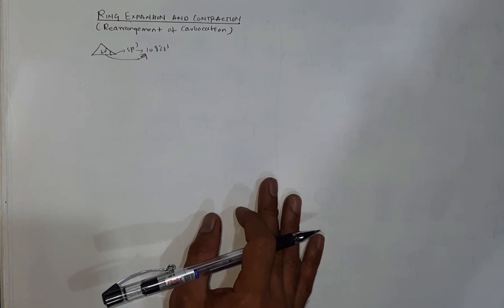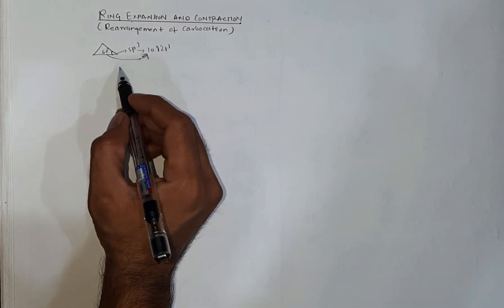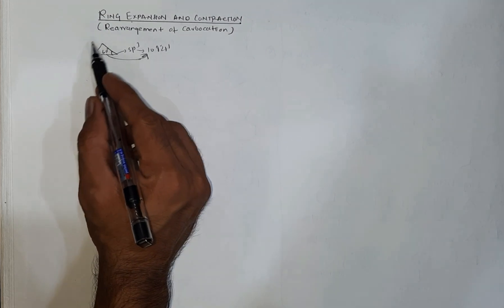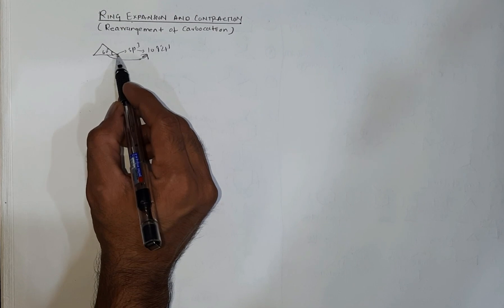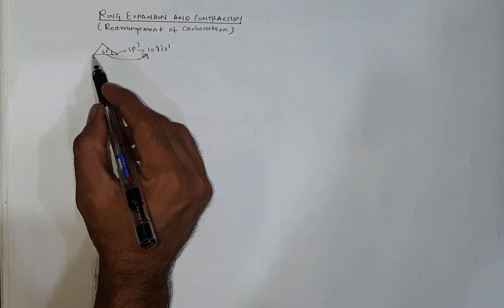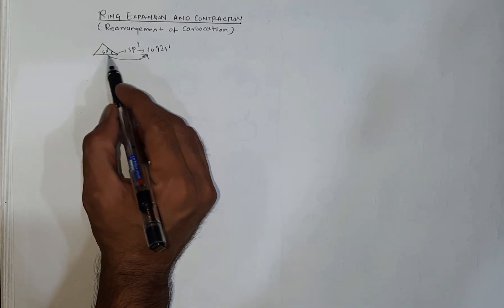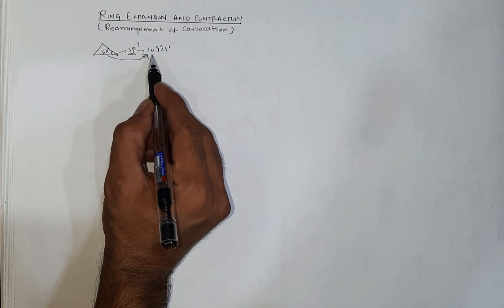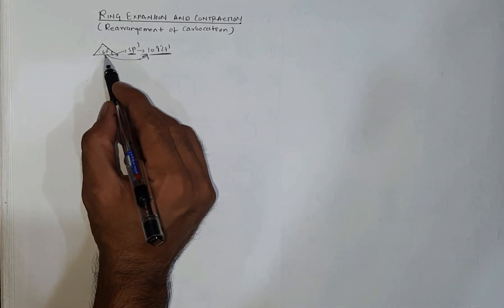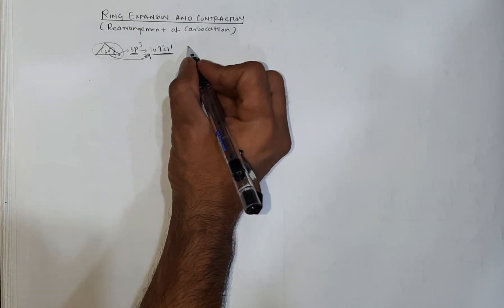Let's continue with the rearrangement of carbocation with respect to ring expansion and ring contraction. First, let us revise: cycloalkanes experience angle strain because the actual angle is not equivalent to the angle with respect to the hybridization of the carbon atom. For cyclopropane, the carbon atom is sp3 hybridized — the ideal angle should be 109 degrees 28 minutes, but the angle inside is 60 degrees, showing a lot of deviation, making this structure highly unstable.